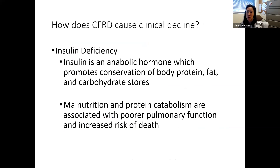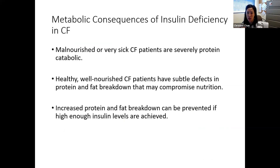How does CFRD cause clinical decline? Insulin deficiency — insulin is a really potent anabolic hormone. It promotes conservation of body protein, fat, and carbohydrate stores. Malnutrition and protein breakdown are associated with worse pulmonary function and increased risk of death. Individuals who are malnourished or really sick are severely protein catabolic. Even healthy, well-nourished CF patients can have subtle defects related to this insulin deficiency that affect protein and fat breakdown and may compromise nutrition. There's a thinking that this protein and fat breakdown can be prevented if we can restore that insulin insufficiency and replace insulin.